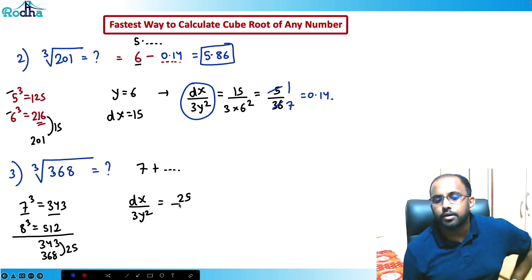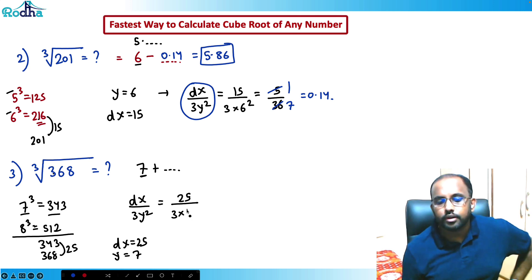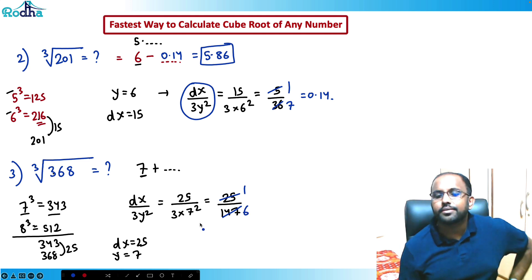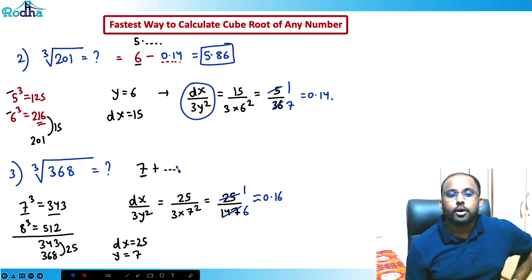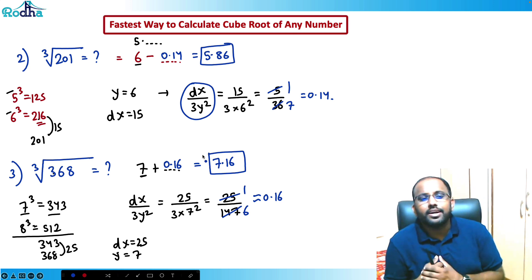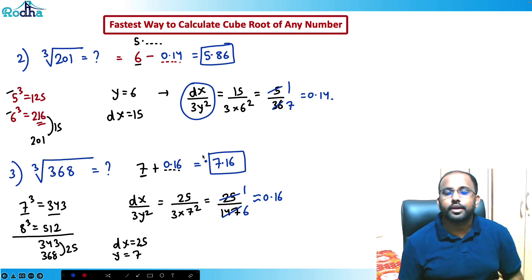dx = 368 − 343 = 25. Decimal part = 25 / (3 × 7²) = 25/147 ≈ 1/6 ≈ 0.16. So cube root of 368 ≈ 7 + 0.16 = 7.16. Now let's see this technique applied in an actual aptitude question.